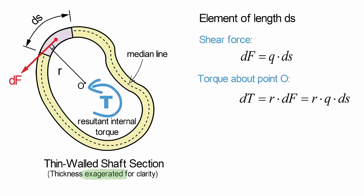Substituting in our result for df, we get that dt is equal to r times q times ds. If we integrate this result over the entire perimeter of the cross-section, we can obtain the total resultant torque T.